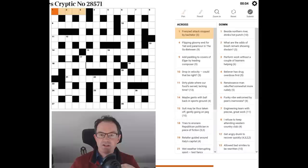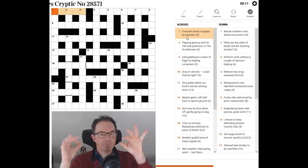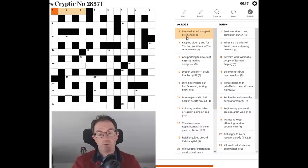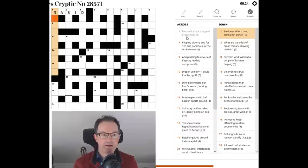So one across, frenzied attack stopped by bachelor. So stopped by bachelor means put a B in the middle. It's like if you cork a bottle you stop it. So it's rabid isn't it? Yeah okay so we need a four letter word for an attack. Once I thought I needed that I thought of raid. I put the B in the middle I get rabid and if you're frenzied you're certainly rabid.